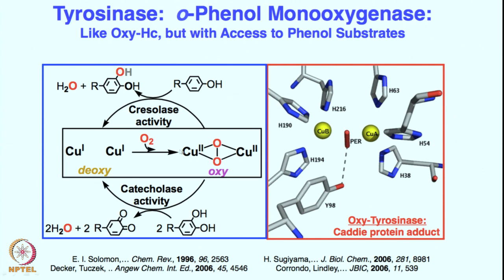Tyrosinase utilizes exactly the same active species — that is, 2 copper(I) centers each supported by 3 histidines — reacting with oxygen to give the dinuclear copper(II) side-on bound peroxo species. Once again, this oxygen is reduced by 2 electrons. The only difference between hemocyanin and tyrosinase is that in tyrosinase you have a phenol appended to this active site. The side-on peroxo is electrophilic in nature, and therefore an electrophilic aromatic substitution reaction happens, giving rise from phenol or tyrosine to catechol and a water molecule. If you then take this catechol product back into the reaction you get quinone.